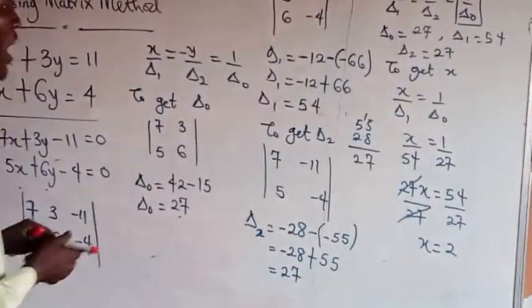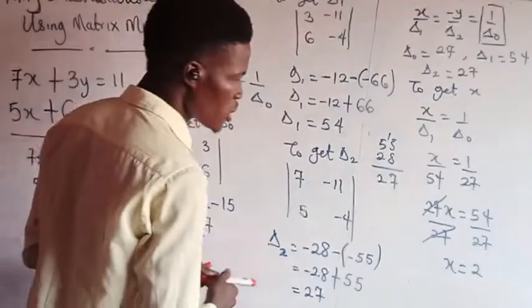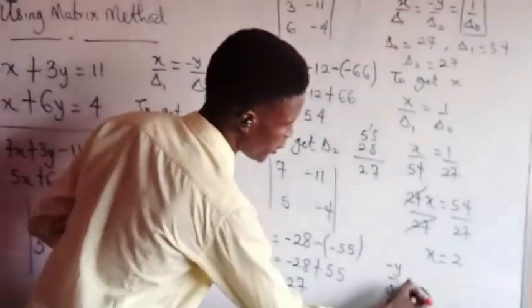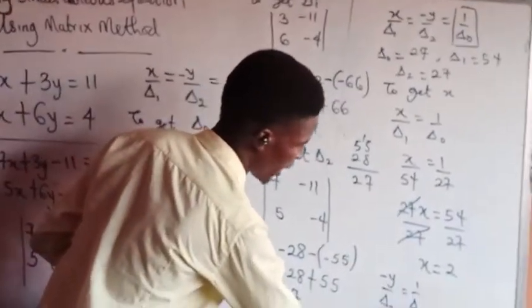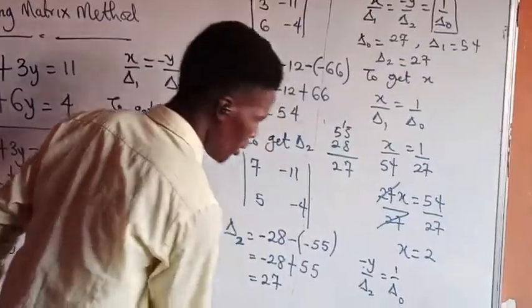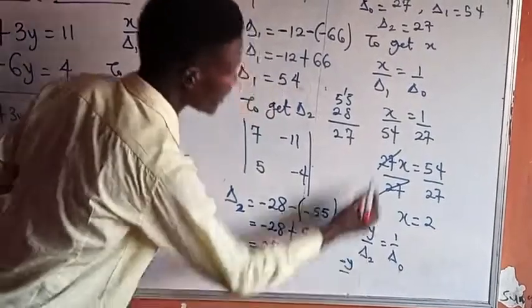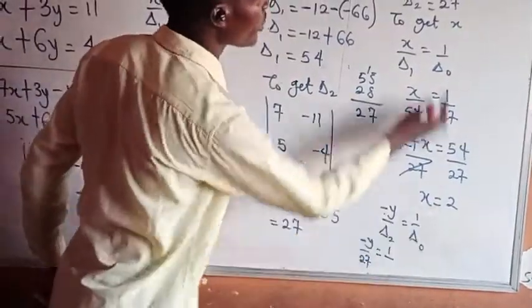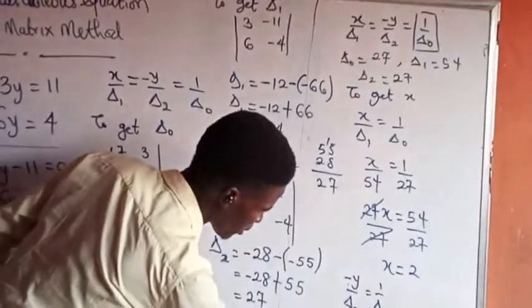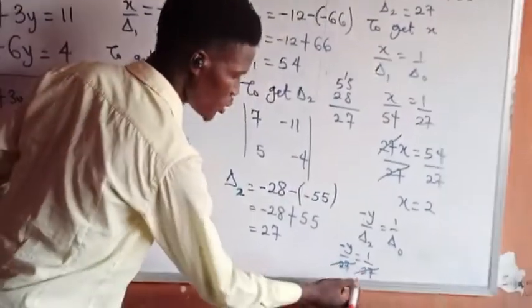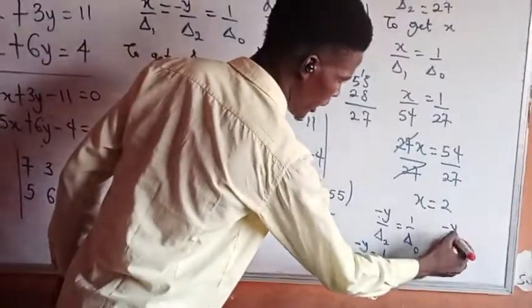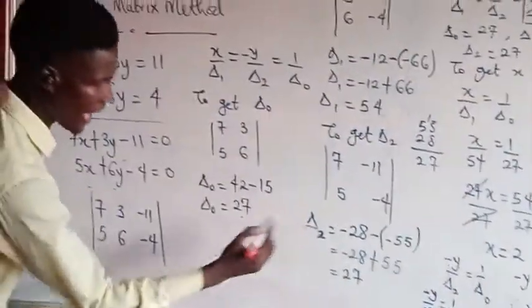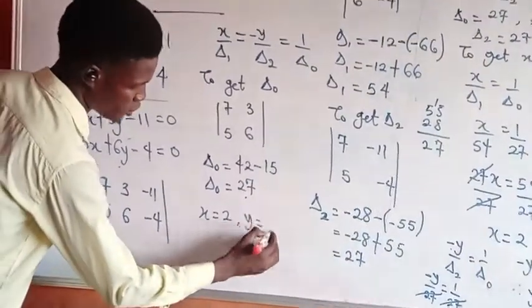Now let's get the value of y. To get y, I use: minus y over delta 2 equals 1 over delta naught. That is: minus y over 27 equals 1 over 27. The denominators are the same, so they cancel each other. I will now have minus y equals 1. Therefore, my y is equal to minus 1. So our x is equal to 2 and our y is equal to minus 1.